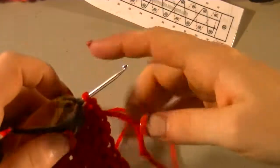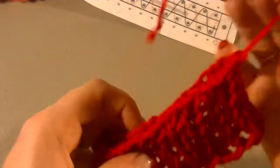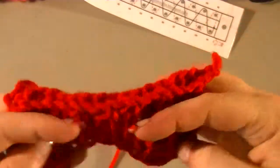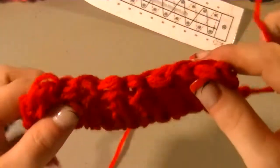You're going to take this cast on strand and just pull it through, and there is your cast on. See, it gave it a nice even finished look.